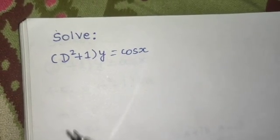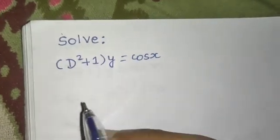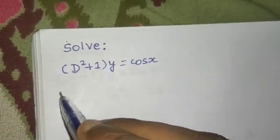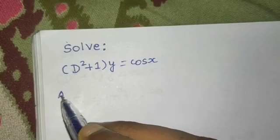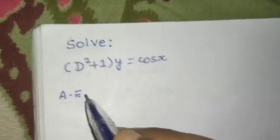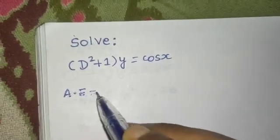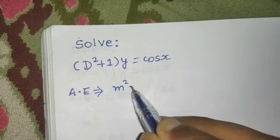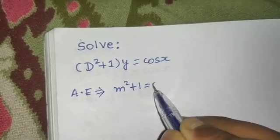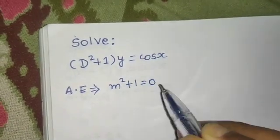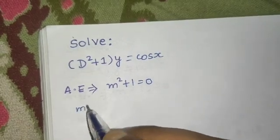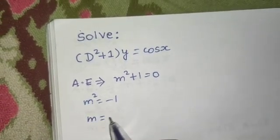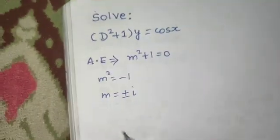Let's go through each step one by one. First step: to find the auxiliary equation, you just replace D by m. So you get m squared plus 1, equate it to zero. This is your auxiliary equation. Solve it: m squared equals minus one, so m equals plus or minus iota.